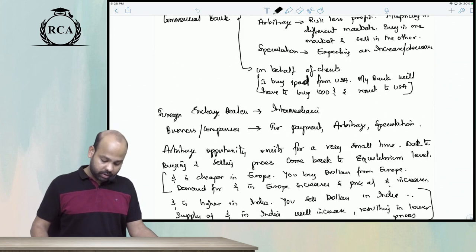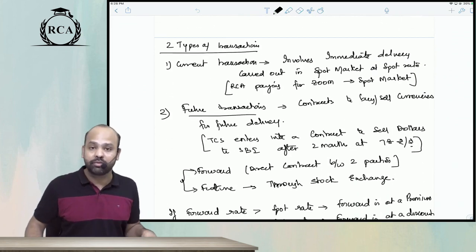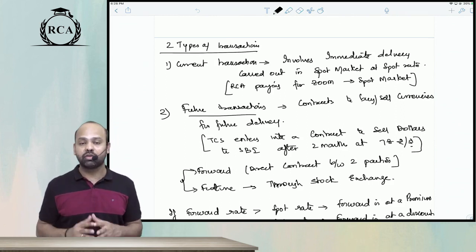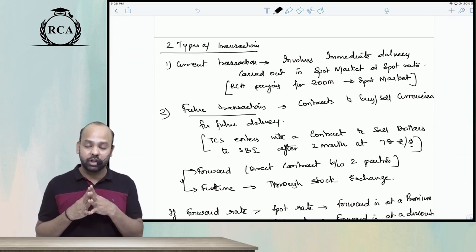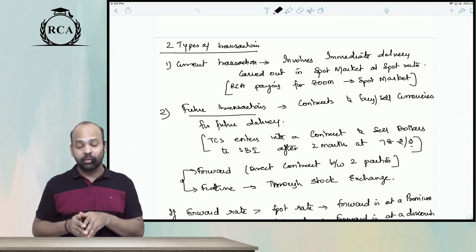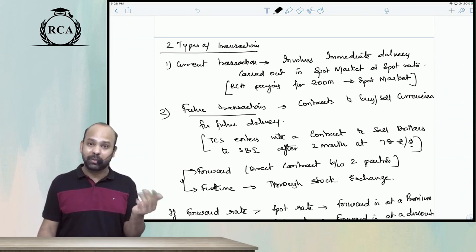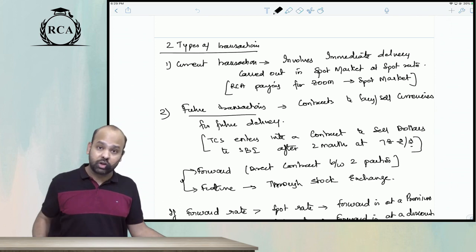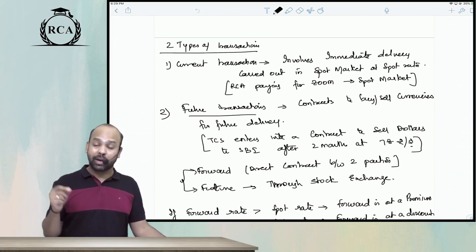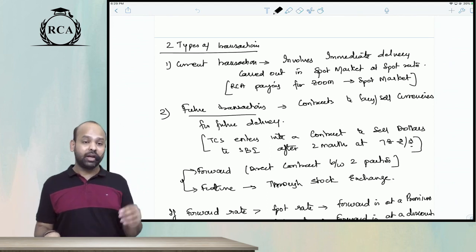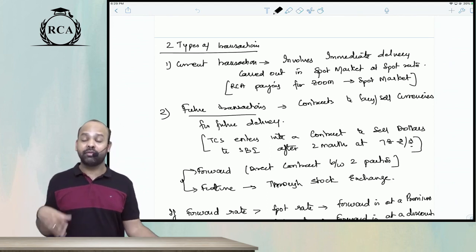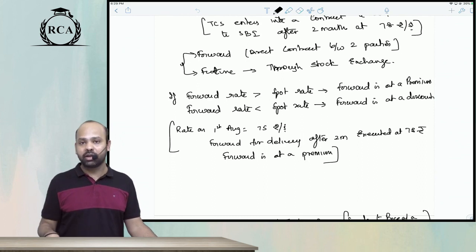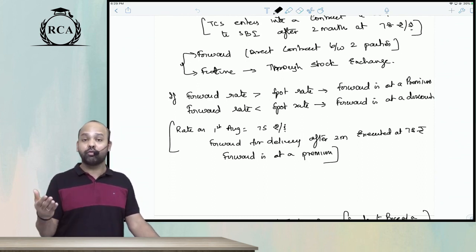There are two types of transactions in the foreign exchange market. One is a current transaction, also known as a spot market transaction, which involves immediate delivery or receipt of foreign exchange — for example, immediately selling dollars and receiving rupees. The other is a future transaction, also known as a forward transaction, which is a contract entered into today to buy or sell foreign currency on a later date at a predetermined rate. If it is a direct contract between two parties, it is called a forward contract; if through a stock exchange, it is called a futures contract. If the forward rate is greater than the spot rate, the forward rate is at a premium; if less, it is at a discount.